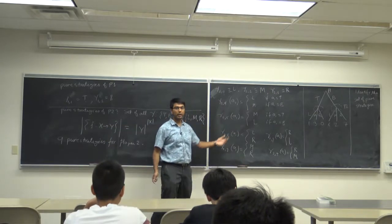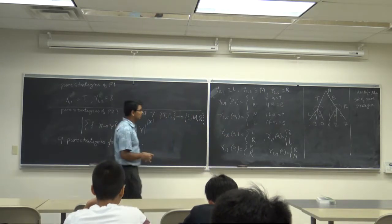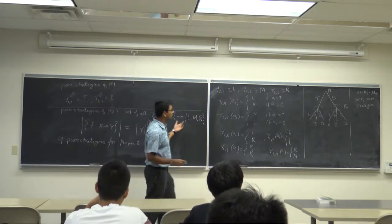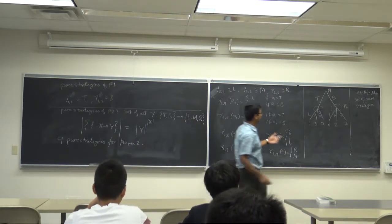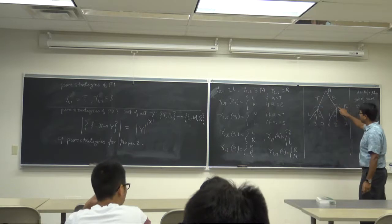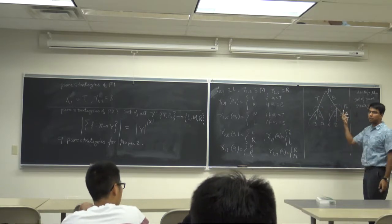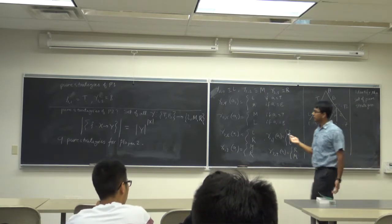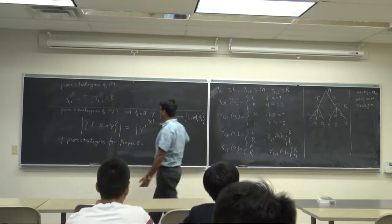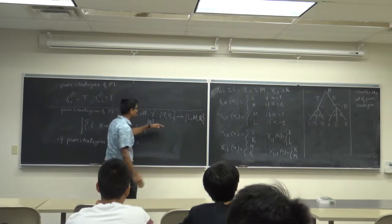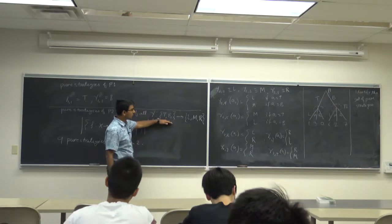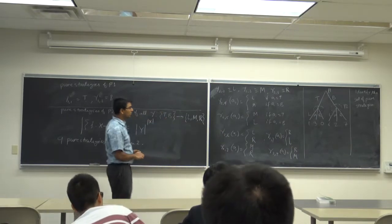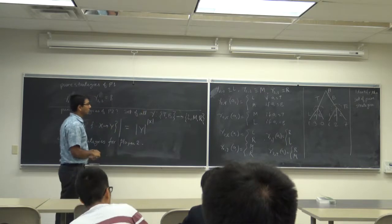In the previous case when player two did not know which node it was at, it had only 3 actions: L, M, R. But now, because it has information, the number of strategies has exploded from 3 to 9.